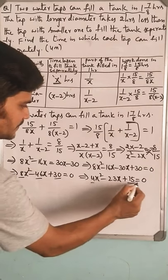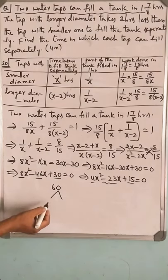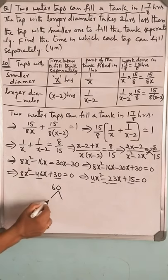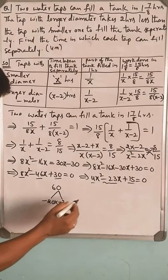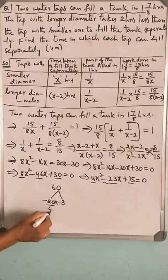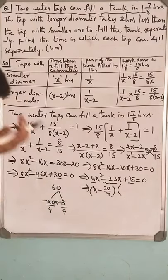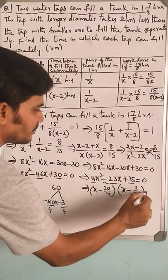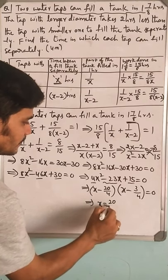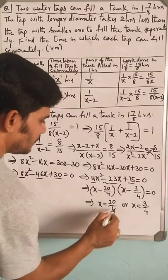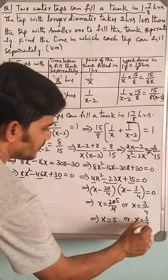15 times 4 is 60. 60 has to be written as product of two numbers which sum to minus 23. I know 20 times 3 is 60, minus times minus is plus. So the factorization becomes (x - 20/4)(x - 3/4) equals 0, which gives x equals 20/4 or x equals 3/4. That is x equals 5 or x equals 3/4 hours.